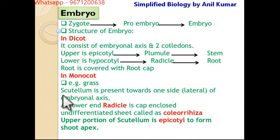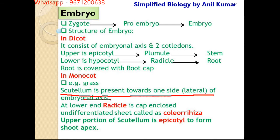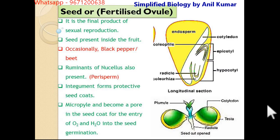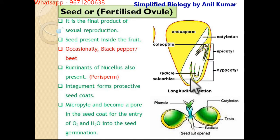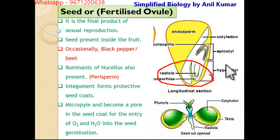In the monocot case, the scutellum is present towards one side on the embryonal axis — that is named the scutellum. On the lateral side, the radical cap is enclosed. The undifferentiated lower portion is named as the coleorhiza. The upper portion is named as the epicotyl, which further forms the coleoptile.